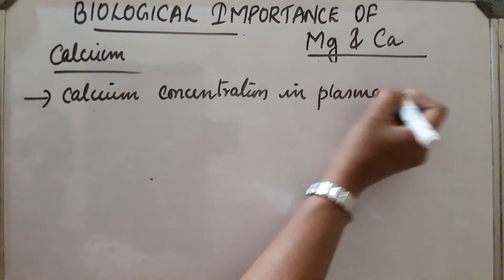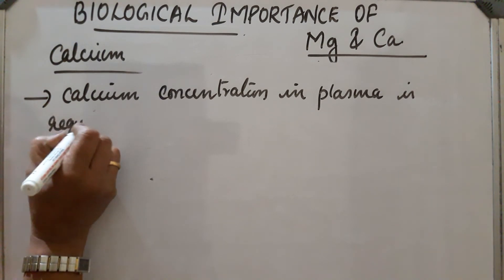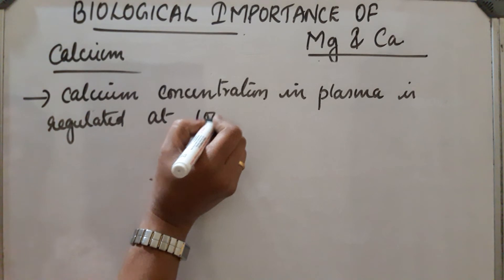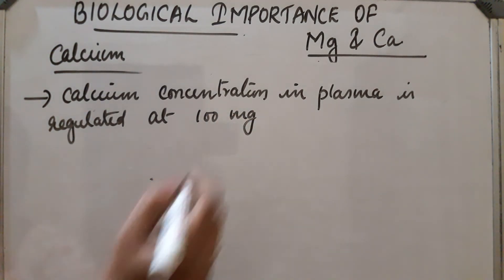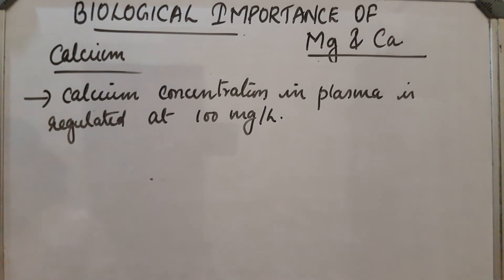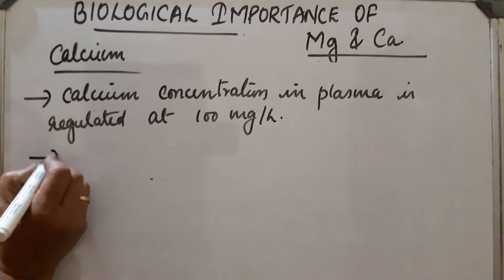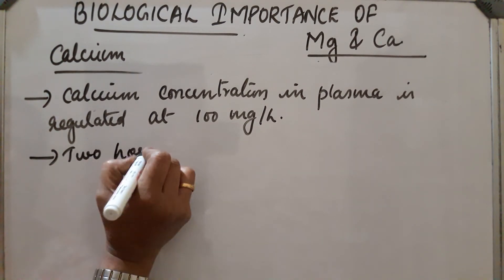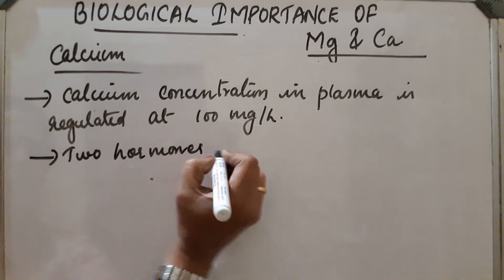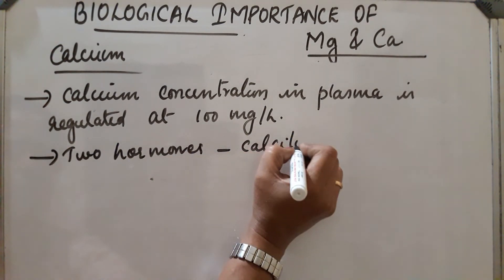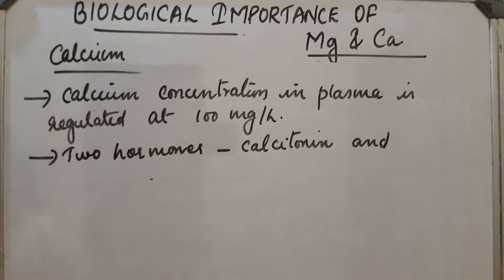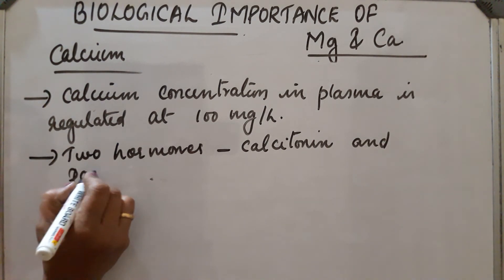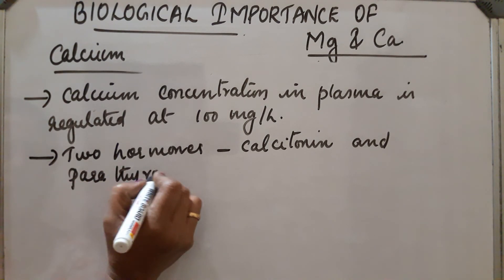Calcium concentration in plasma is regulated at about 100 milligram per liter. This concentration is maintained by two hormones, that is calcitonin and parathyroid hormone.